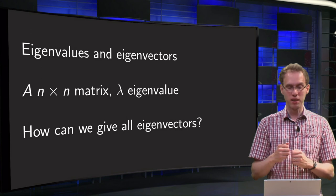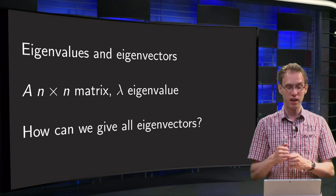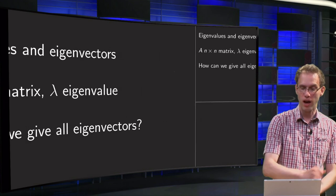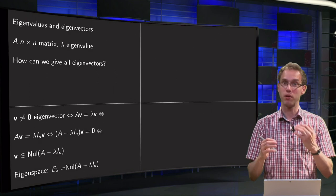So suppose A is an n times n matrix, we know lambda is an eigenvalue. The problem is to find all eigenvectors of the matrix A. So what can we do?